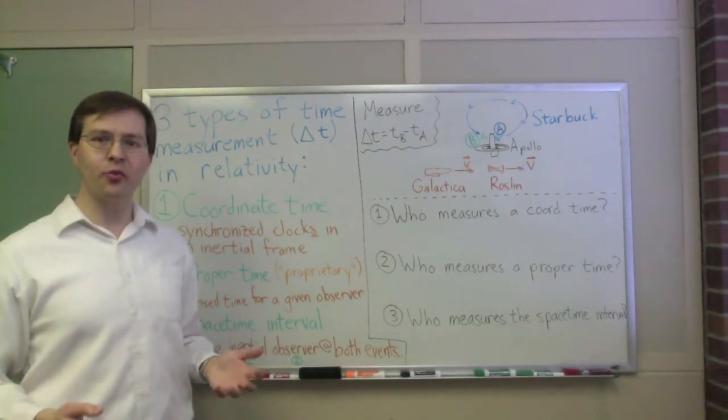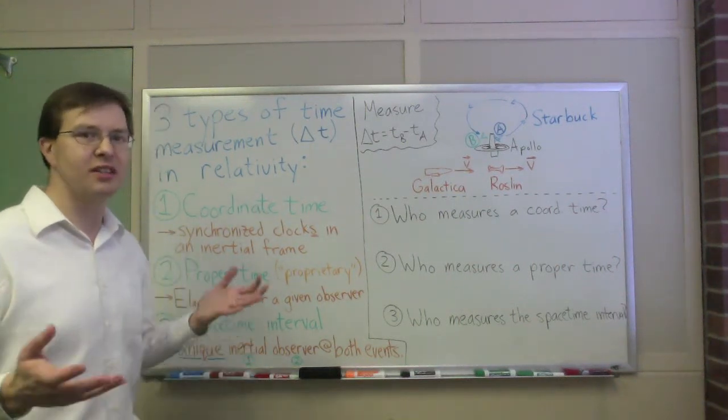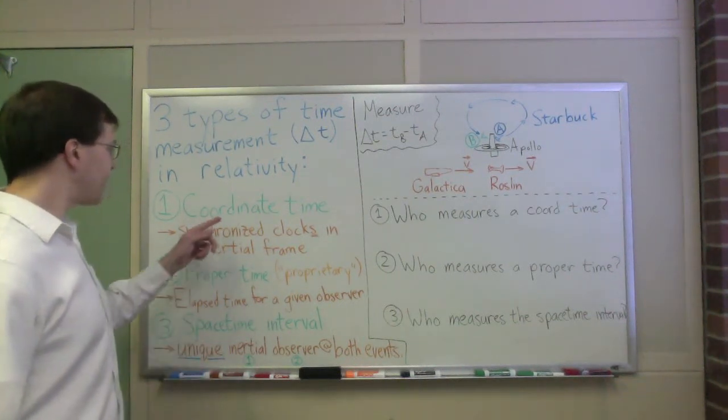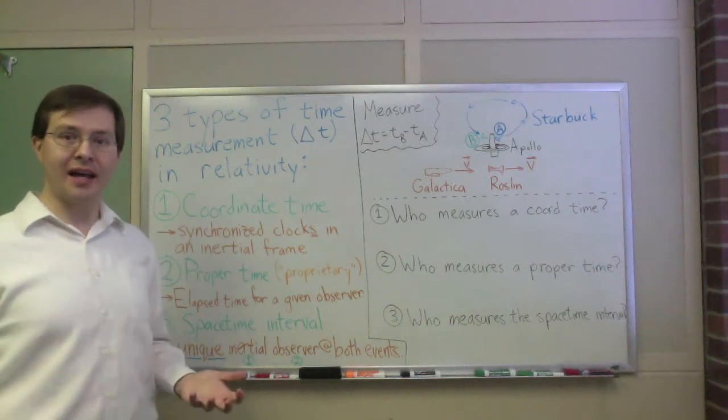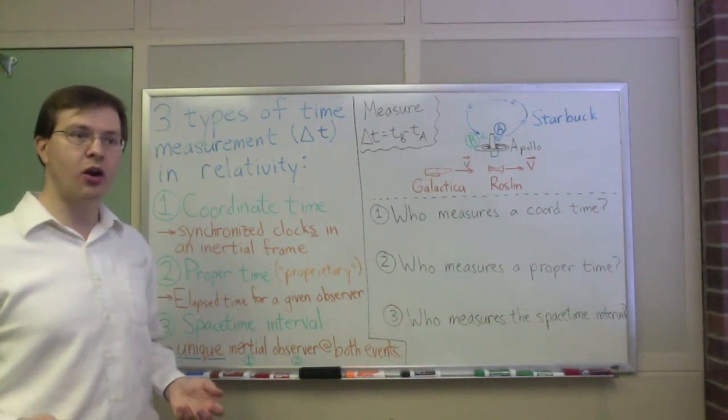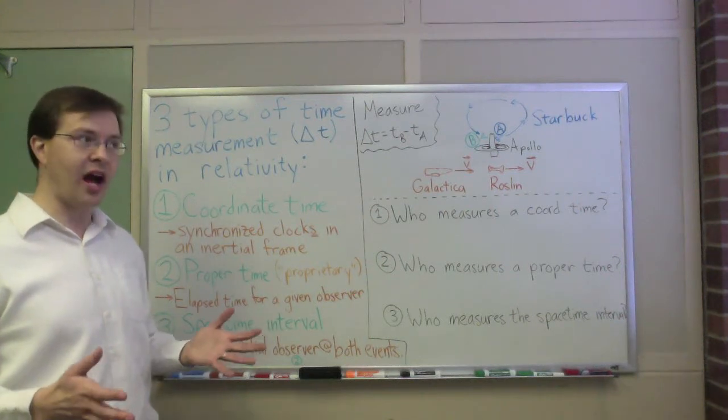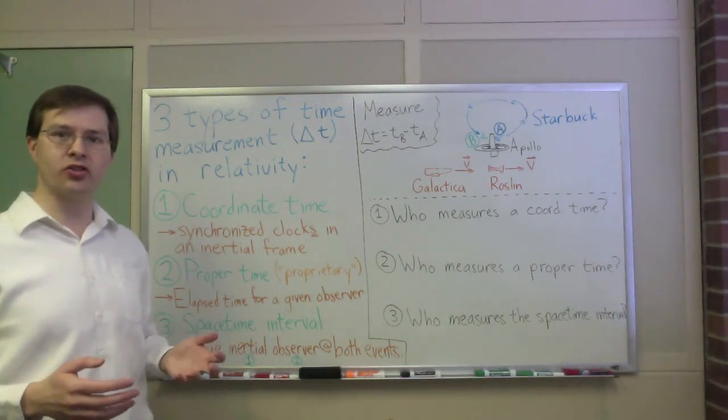In relativity, there are three ways of thinking about this. It depends on how you define it. But there are three important concepts to talk about for time in relativity. The first one is coordinate time. If you've studied some relativity, you know that there's a lot of care you need to take to synchronize clocks in a single inertial reference frame.